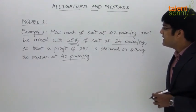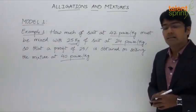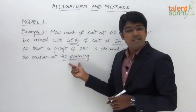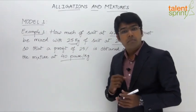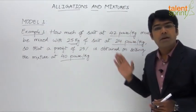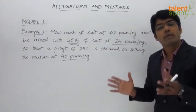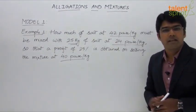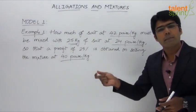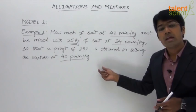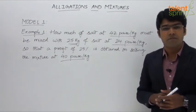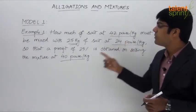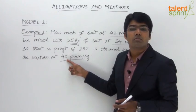An important point: the selling price of the mixture is given as 40 paisa per kg. Whenever we apply the allegation rule, it is based on the cost price of all the ingredients — cost price of type 1, cost price of type 2, and cost price of the mixture. We cannot use 42, 24, and 40 directly in the allegation rule, because 42 and 24 are cost prices while 40 is the selling price.